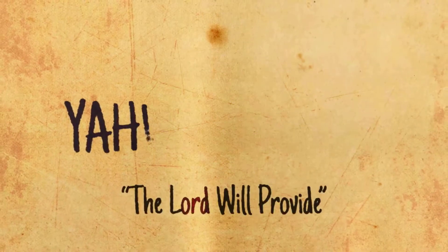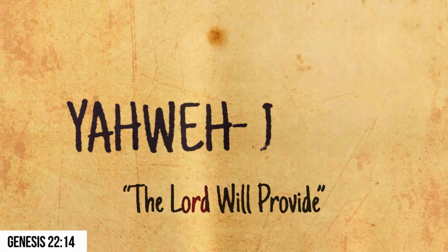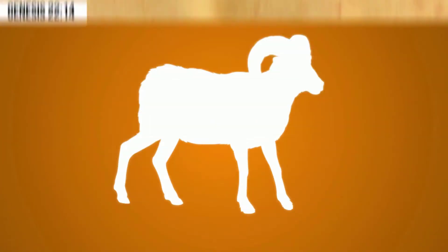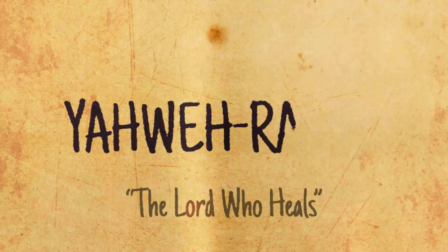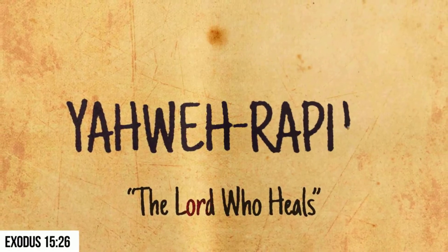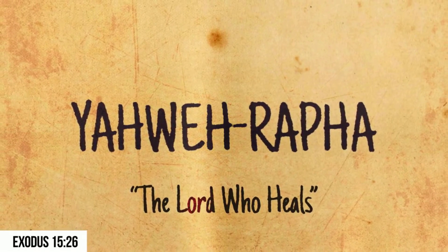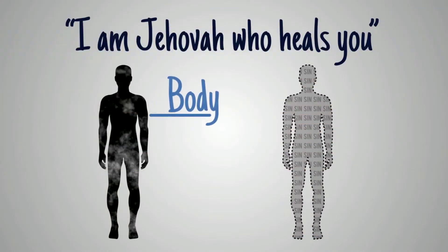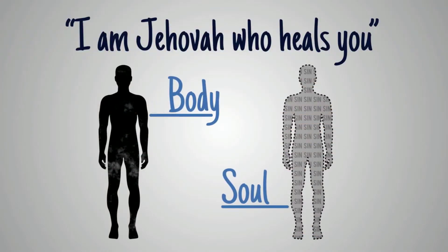Yahweh Jireh — The Lord will provide. The name memorialized by Abraham when God provided the ram to be sacrificed in place of Isaac. Yahweh Rapha — The Lord who heals. "I am Jehovah who heals you, both in body and soul" — in body by preserving from and curing diseases, and in soul by pardoning iniquities.